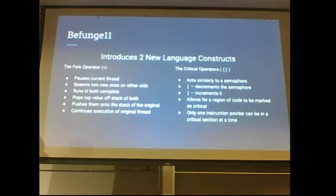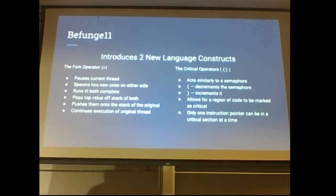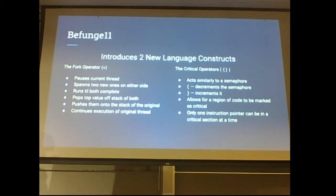The two main language constructs we introduce are the fork operator, the equals sign. When encountered, it will cause the current program to split the cursor into two new cursors, one on either side of the equals sign. From there, execution continues normally, with each thread having its own copy of the stack, and continuing until it reaches a point of termination. It will then pop off the top value of the stack and push it onto the stack of the original controlling thread. Once both threads have ended, the original thread will continue its execution with the values obtained from its children.